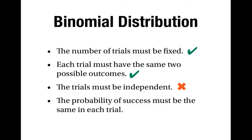But the trials are not independent because the cards are drawn without replacement, and therefore the probability of getting a king changes depending on what cards are drawn. For example, if the first four cards drawn are all kings then the probability of the fifth card being a king is obviously zero. On the other hand, if none of the first four cards drawn are kings then the probability that the fifth card is a king will be four out of 48. This means the trials are not independent.